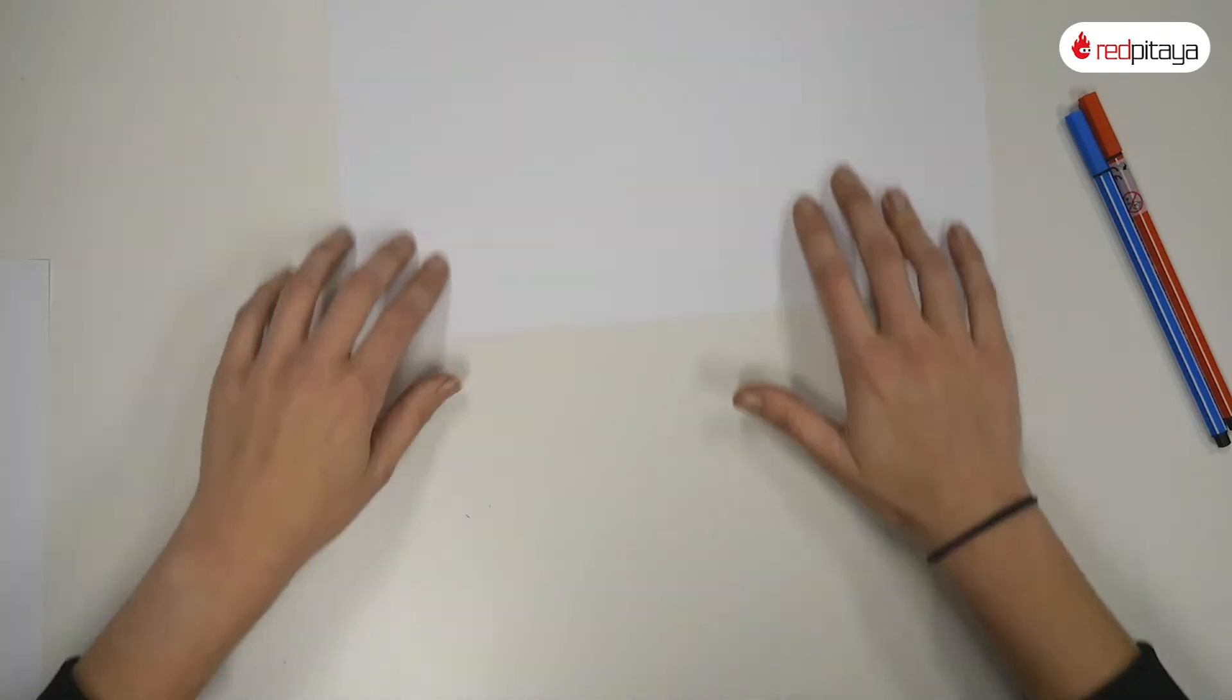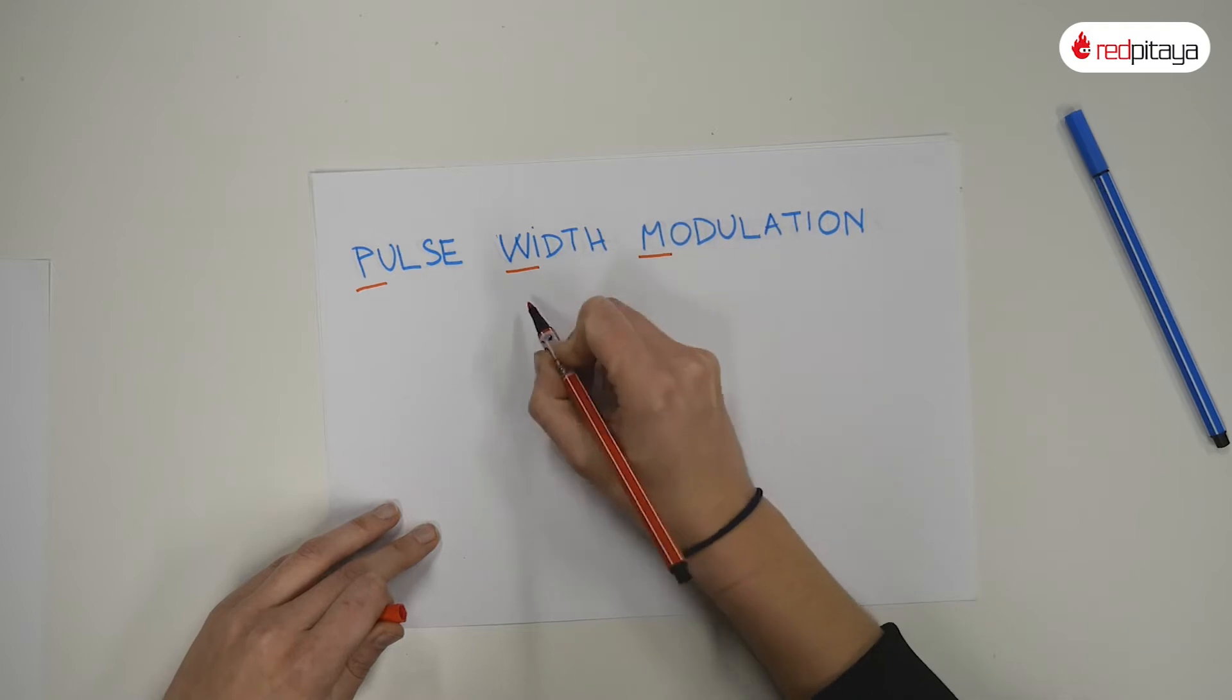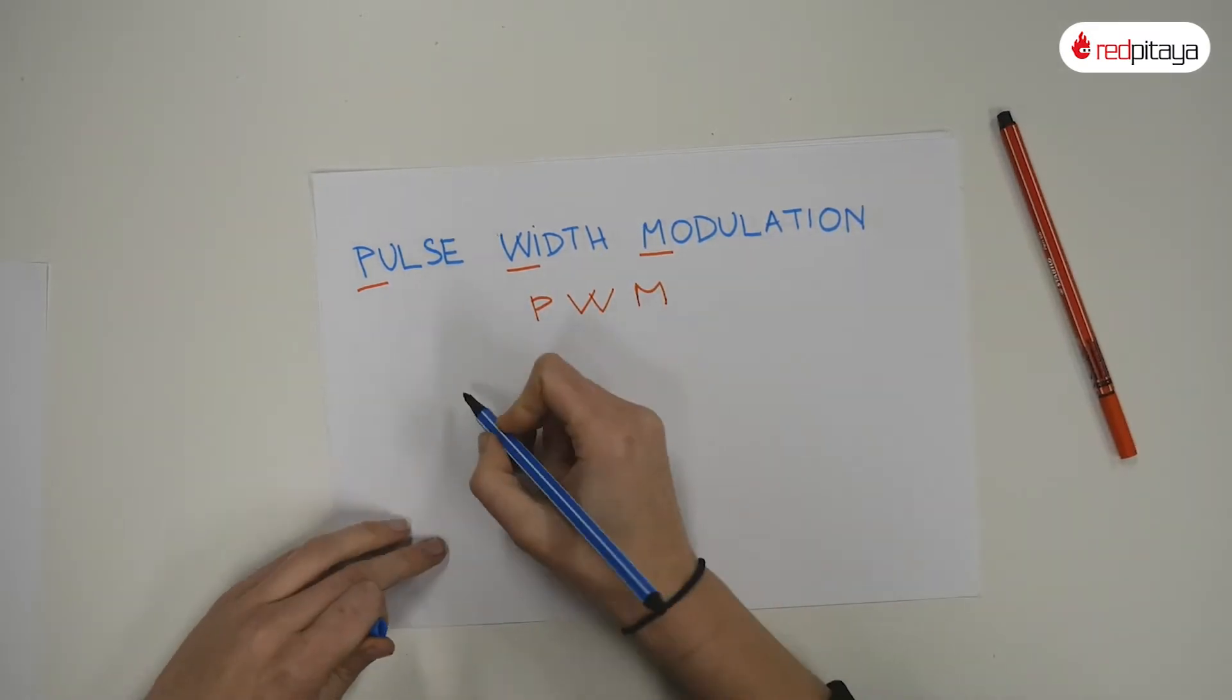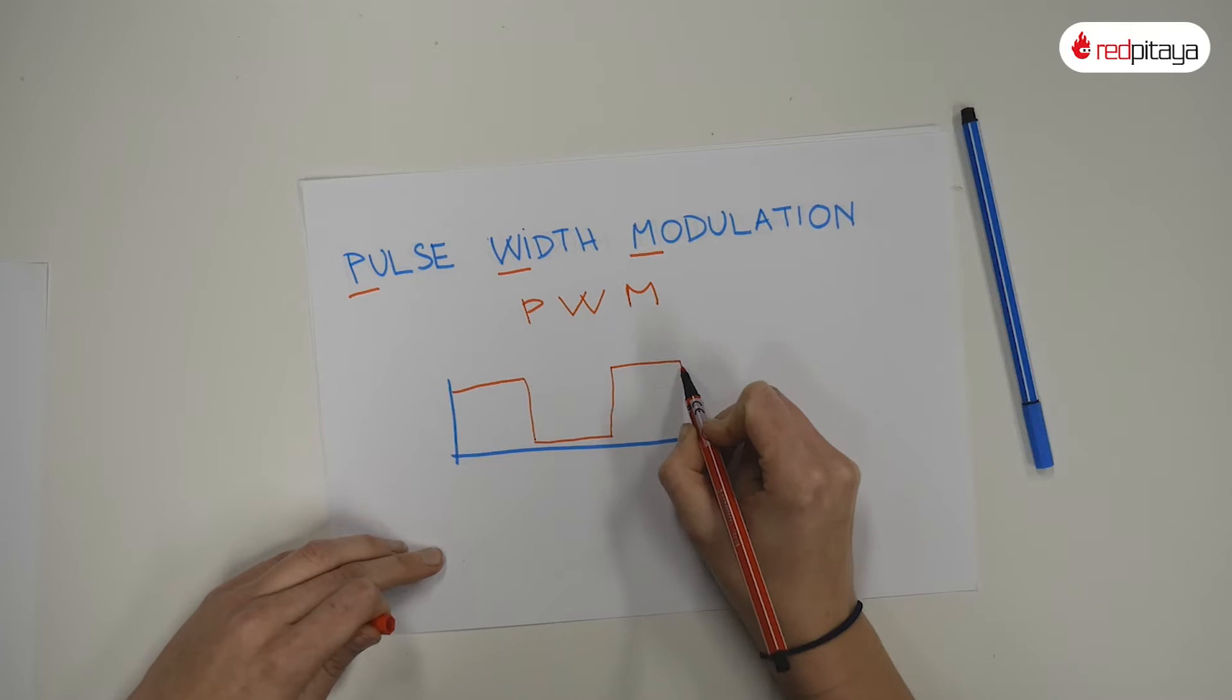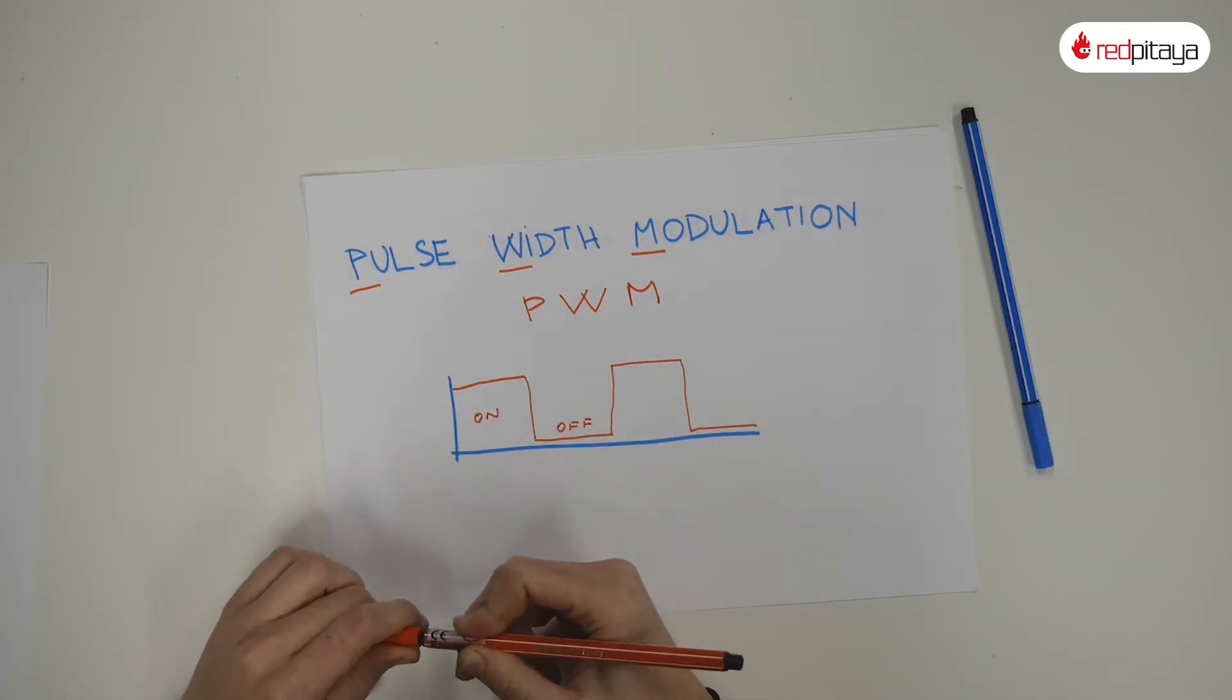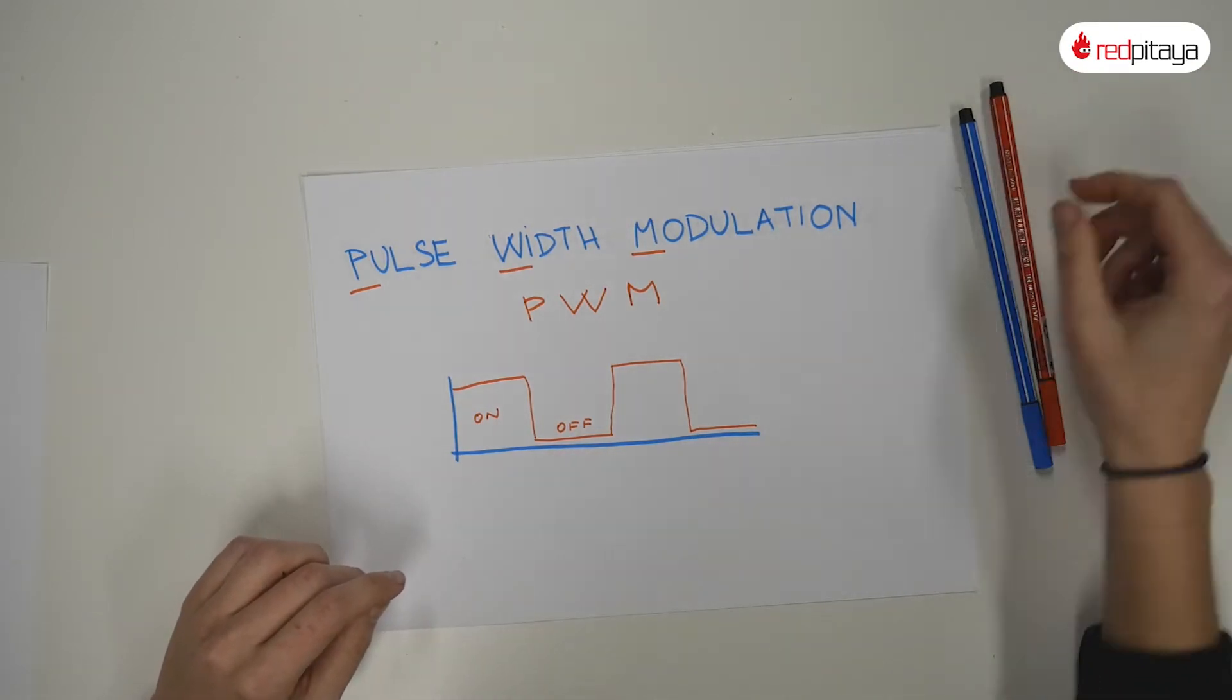We'll start with the basics first. Pulse width modulation or PWM for short works by rapidly switching signals on and off. The switching frequency is high enough the signal is perceived as continuous. By varying the duty cycle its apparent amplitude can be modulated.